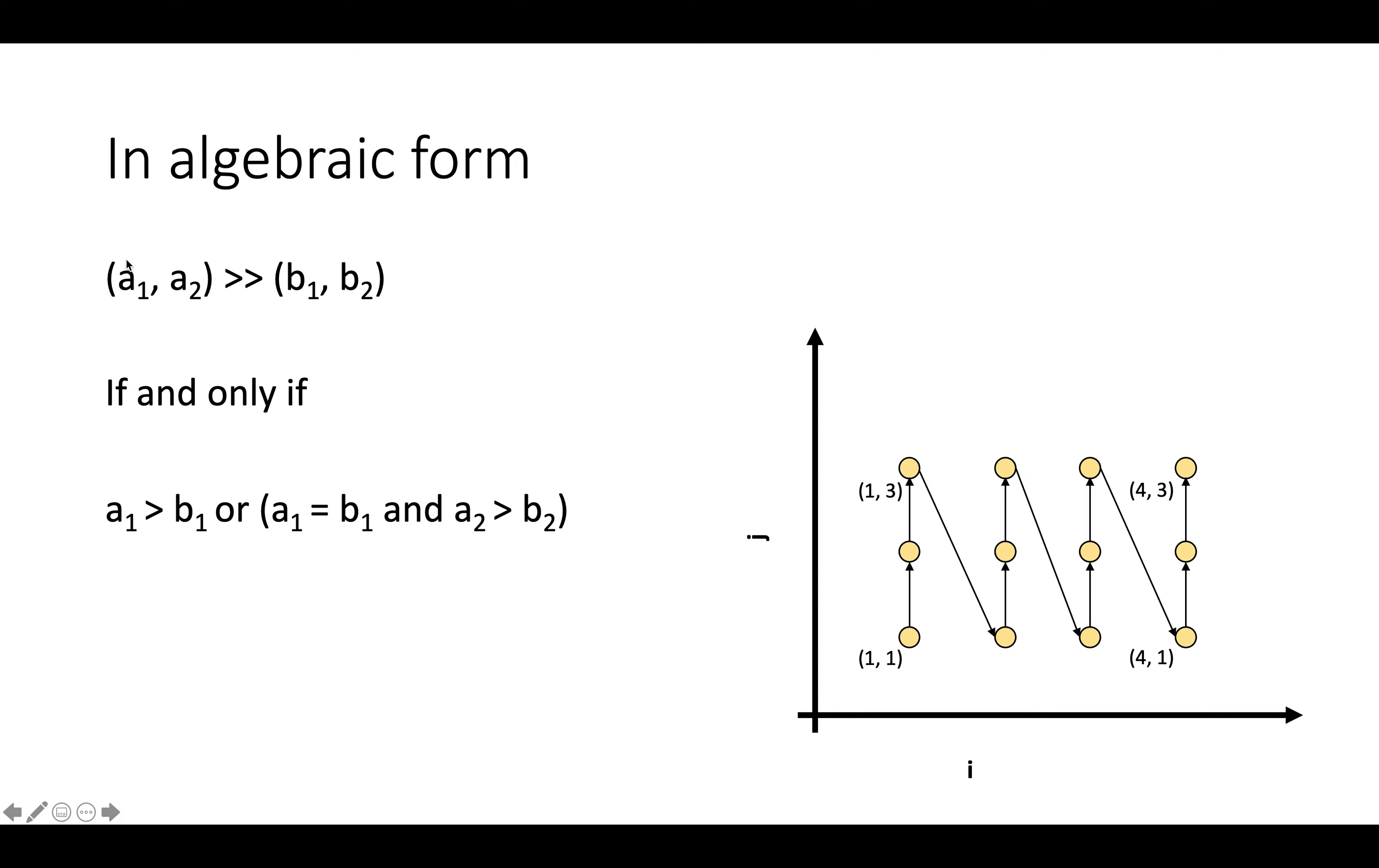In algebraic form, we can write this as that the instance of the statement (a1, a2), so now instead of representing instances of statements in the program with a single number, we represent them with a vector in 2D. So (a1, a2) is lexicographically greater than (b1, b2), if and only if a1 is greater than b1, or a1 is equal to b1, so they're in the same outer loop iteration, and a2 is greater than b2. And now we can say that the statement, say, p(a1, a2), happens after the statement p(b1, b2), if and only if this condition is true.